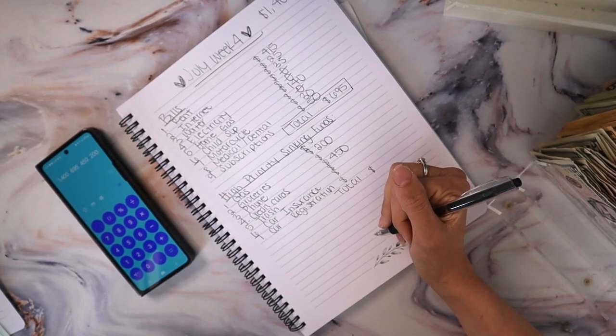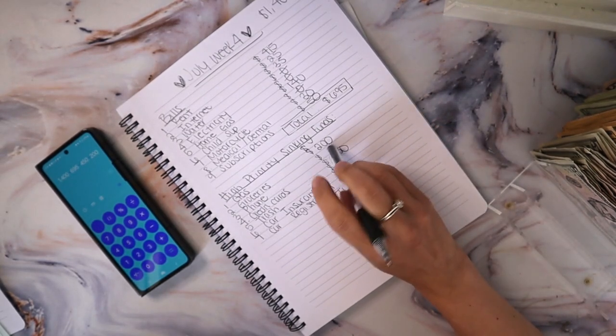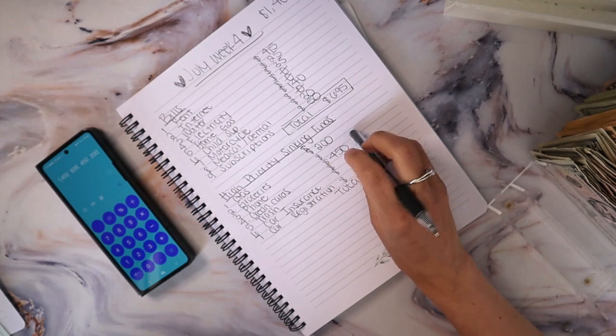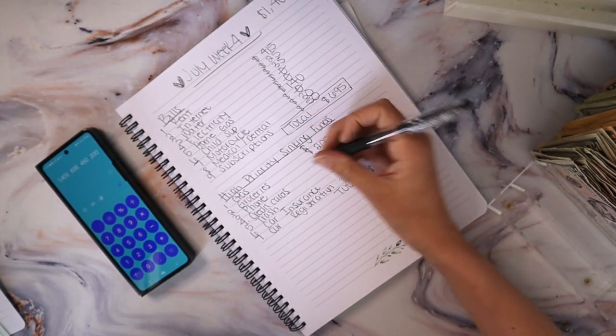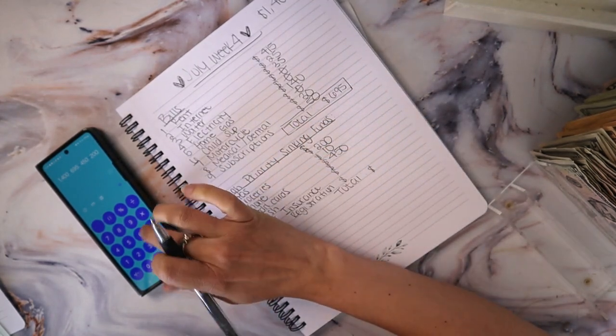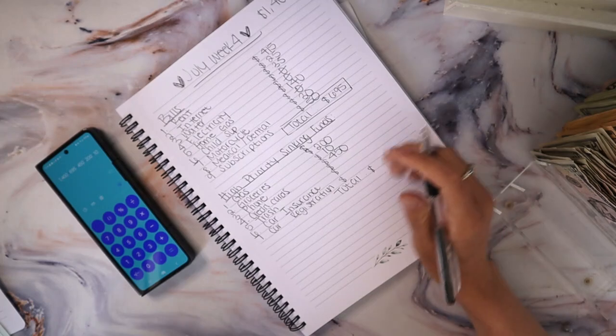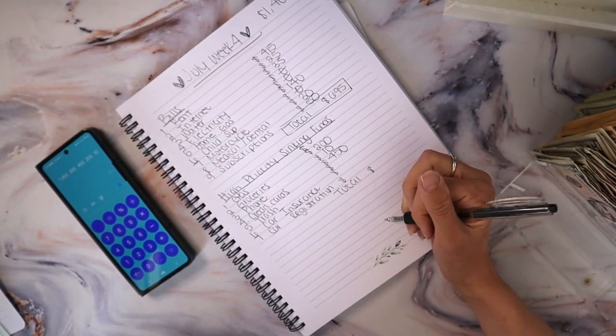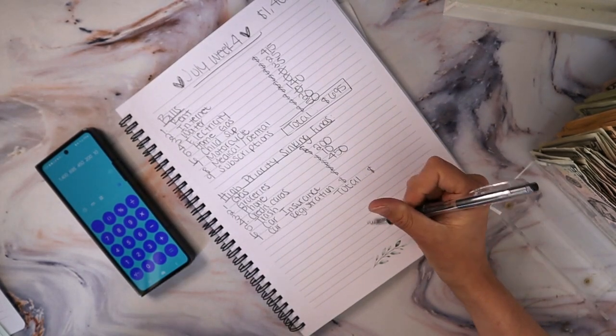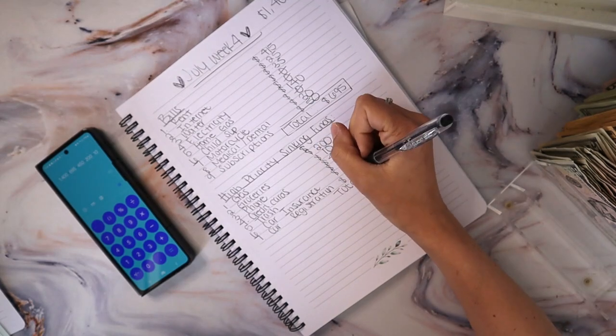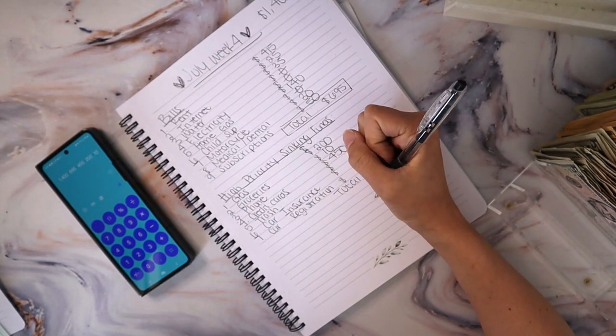So my phone bill is due very, very soon. And I think I'm only $10 short. So I'm going to put $10 here. $45 left. So I got gas for the car, trash, car insurance, and registration.